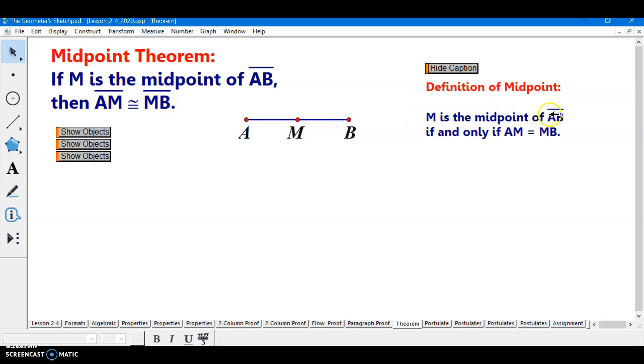M is the midpoint of segment AB. If the distance from A to M, that means distance, is equal to the distance from M to B. And because it also says if and only if, we can say if the distance from A to M equals the distance from M to B, then M is the midpoint.